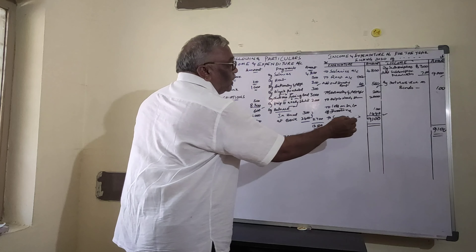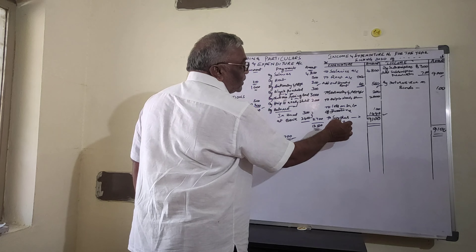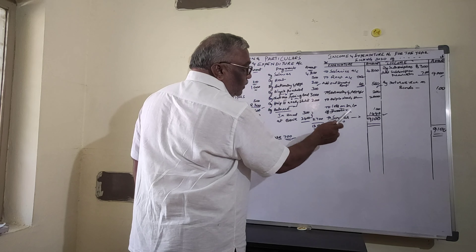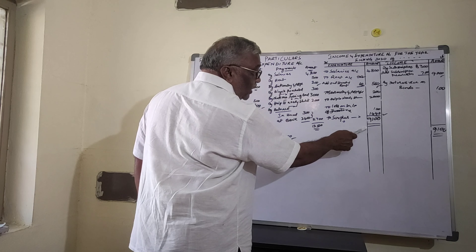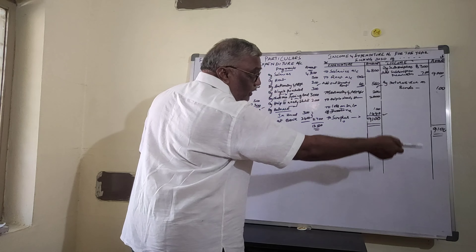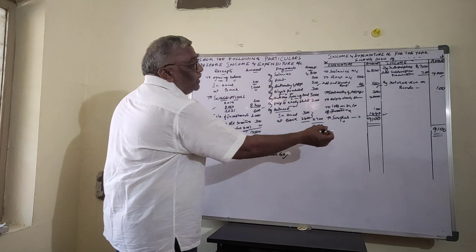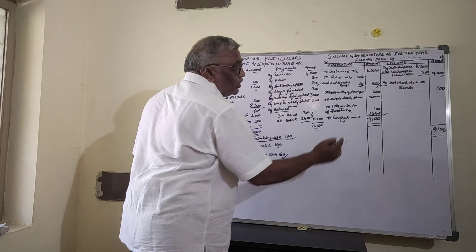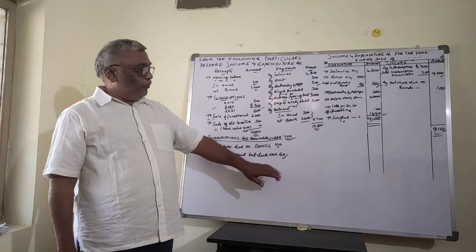The difference amount determines whether there is a surplus or a deficit. A surplus amount is credited and a deficit is debited. In this case, the surplus amount is $1,440.